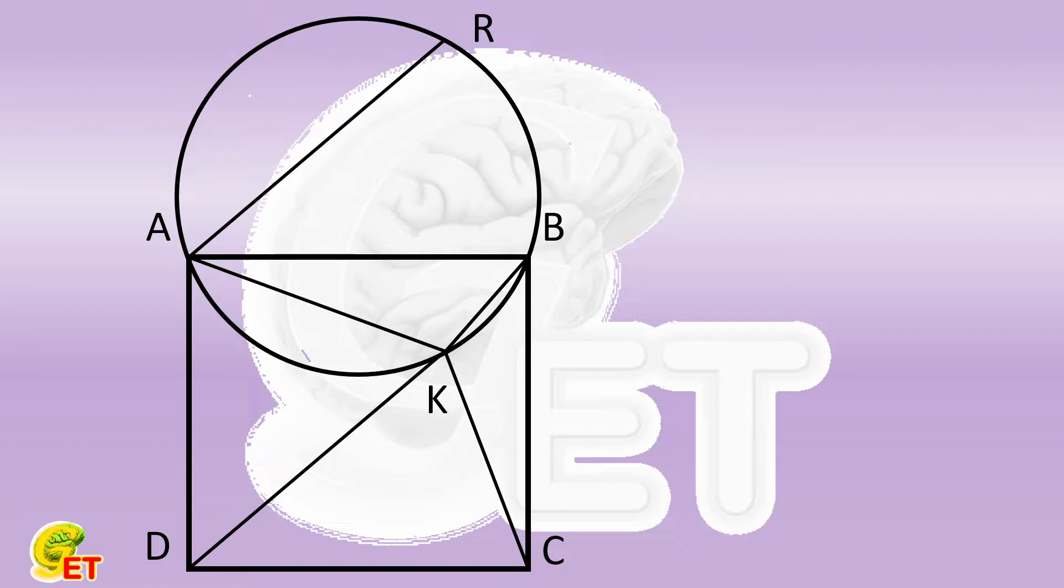We connect RB and further extend it. Followed by extending AB and DC, respectively. The extension of DC intersects the extension of RB at point T. We then extend DK, which intersects AB at point S. At last, we connect R and K.